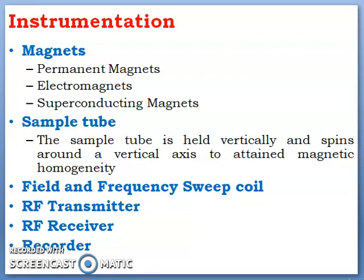The radio frequency transmitter is used to irradiate radio frequency radiation, and the radio frequency receiver is meant to record the absorption of radio frequency radiation. Finally, this is recorded in the recorder in the form of a spectrum.